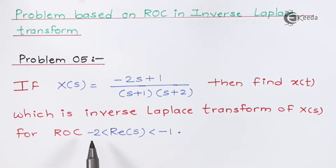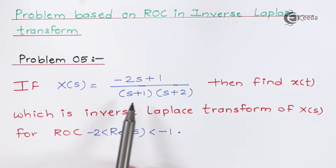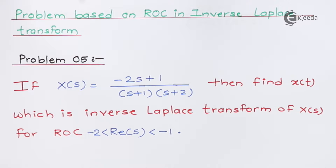First, I'll find out the partial fraction values — that is, I'll find the variable values. Since there are two factors in the denominator, my variables are also two. Then I'll substitute the variable values into the equation and use the ROC to find the inverse Laplace transform x(t).